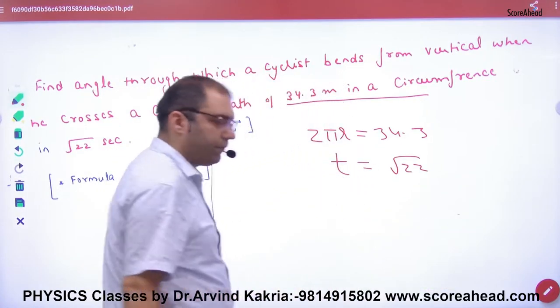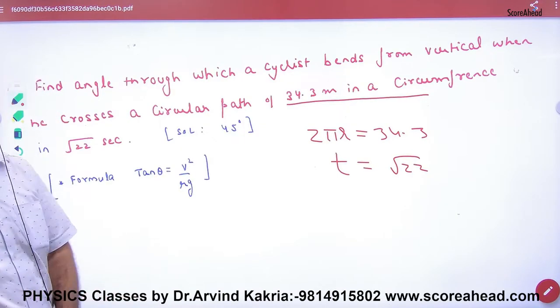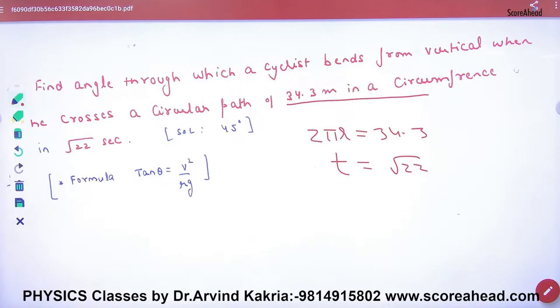And the circumference is how much time it covers. Under root of 22 seconds. What do you have to take out? You have to take out angle. Then, tan theta is what? V square by rg. So tan theta is v square by rg.